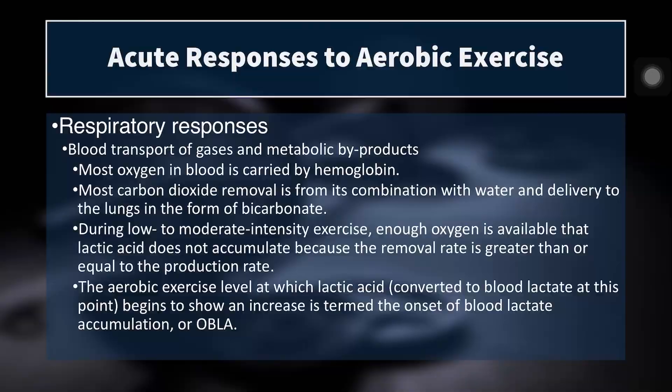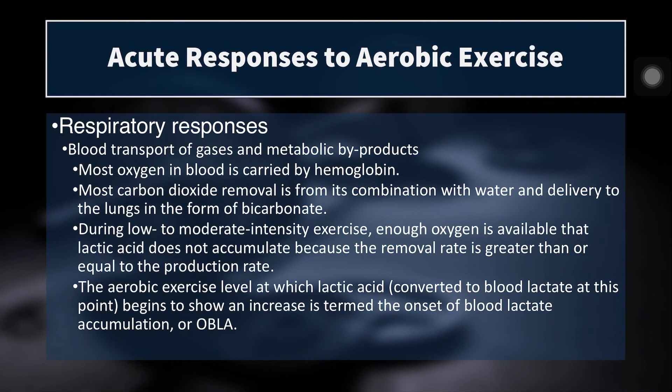Blood doesn't only transport oxygen and carbon dioxide, but also byproducts of exercise and waste. Most oxygen in blood is carried by hemoglobin, and carbon dioxide removal involves its combination with water and delivery to the lungs in the form of bicarbonate. During low to moderate intensity exercise, there's enough oxygen available that lactic acid does not accumulate because the removal rate is greater than or equal to the production rate. But once aerobic exercise exceeds the lactate threshold, it's converted to blood lactate and accumulates — known as the onset of blood lactate.